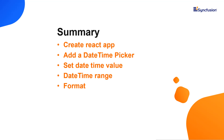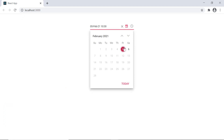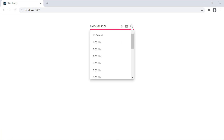Let me recap what we have seen so far. I showed you how to create a React app using the create-react-app command and then how to add the Syncfusion React DateTime Picker component to the app. I explained how to configure the component's features like setting date time values and formats. You can download a working example from the GitHub link in the description below. You can also see if you are eligible for our community license, which will provide you with a free license key to use our products. Thank you for watching this video. If you found it useful, give it a like and subscribe to our channel.